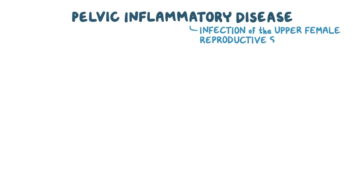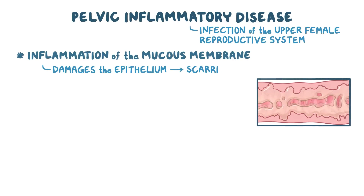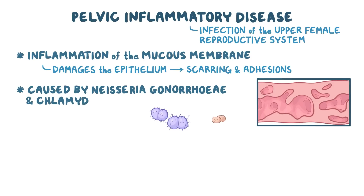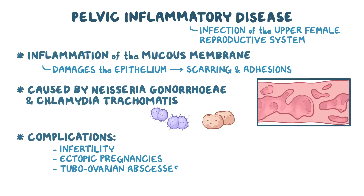As a quick recap: pelvic inflammatory disease is an infection of the upper female reproductive system. It causes inflammation of the mucous membrane of the inner reproductive tract, which damages the epithelium and results in scarring and adhesions, particularly in the fallopian tubes. It's usually caused by Neisseria gonorrhoeae and Chlamydia trachomatis. Complications include infertility, ectopic pregnancies, and tubo-ovarian abscesses.